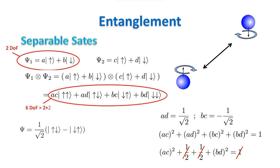Using the fact that the state should be normalized to one, we find that the components should satisfy the equation AC squared plus BD squared equals zero, which is impossible. This state cannot be factorized and therefore it is an entangled state.